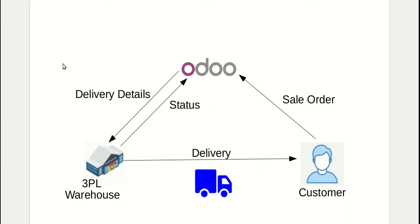Now let's discuss the 3PL flow. There will be a customer who will place an order in Odoo. As the Odoo order proceeds, a delivery order will be created and delivery details will be provided to the 3PL warehouse. The 3PL warehouse will deliver the product in the given quantity as per the delivery details provided to the customer, and they will provide a status of delivery. According to their status we will process the delivery order, and the remaining process will continue as it is in Odoo.